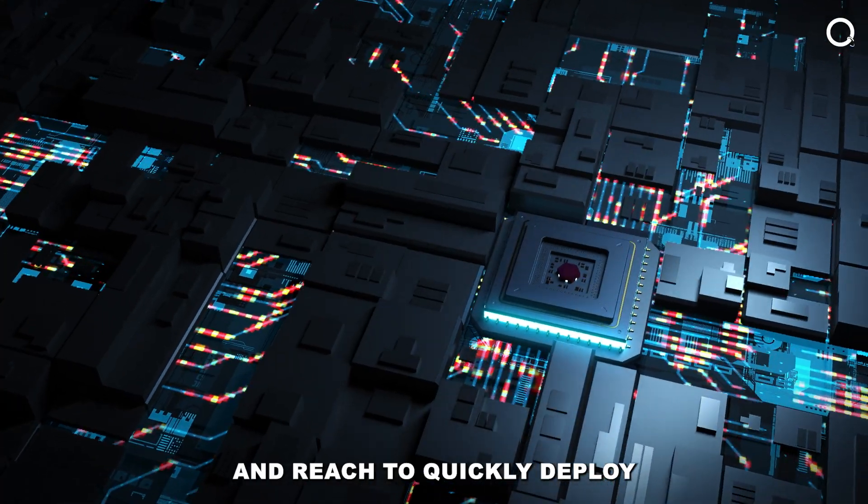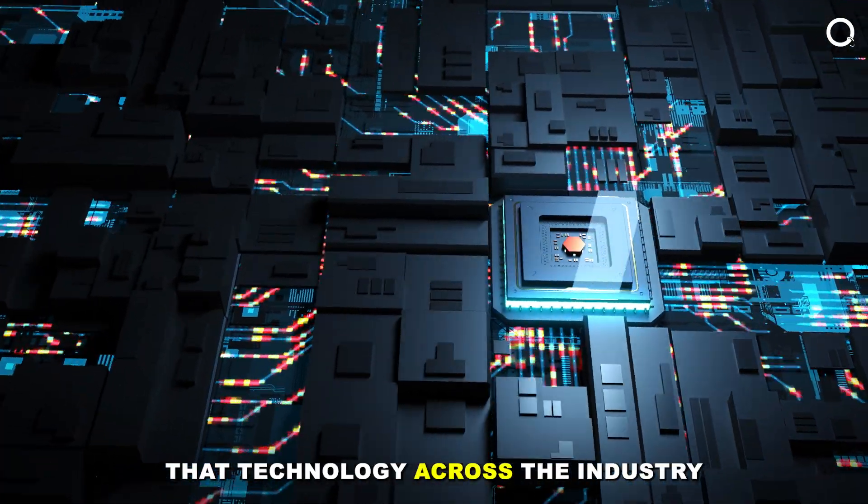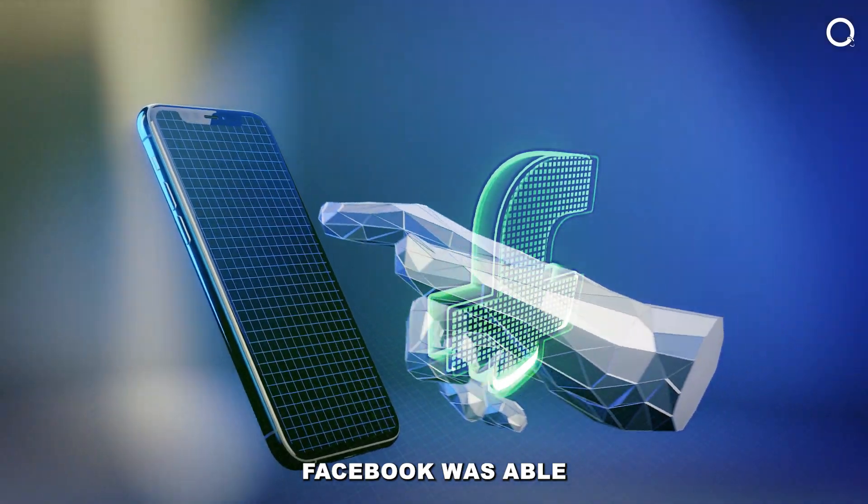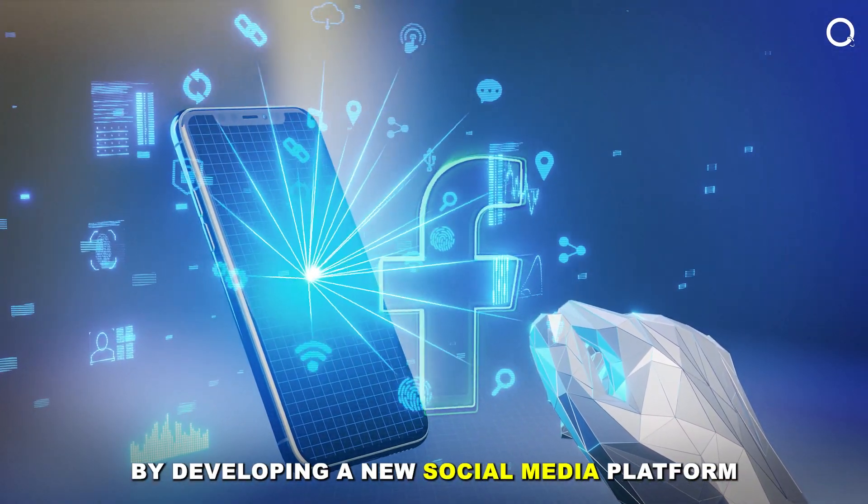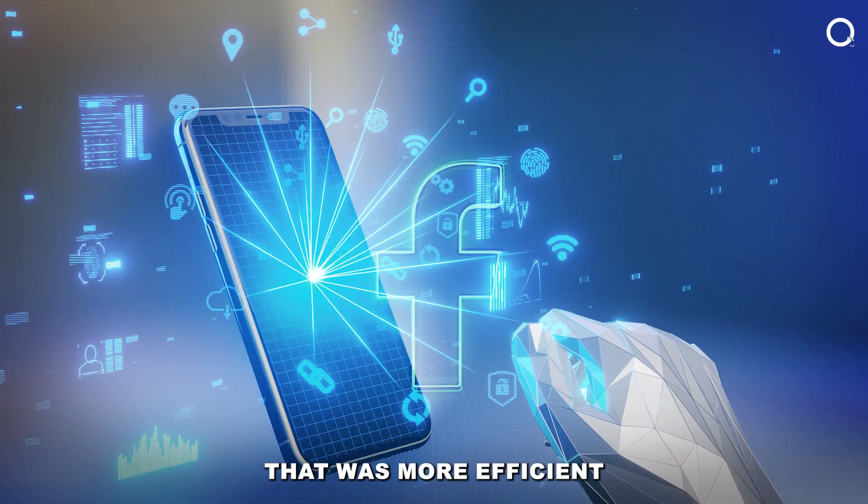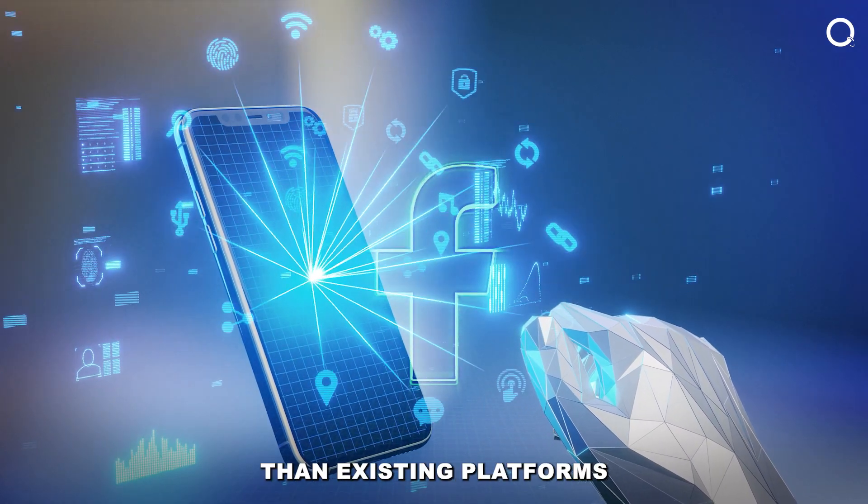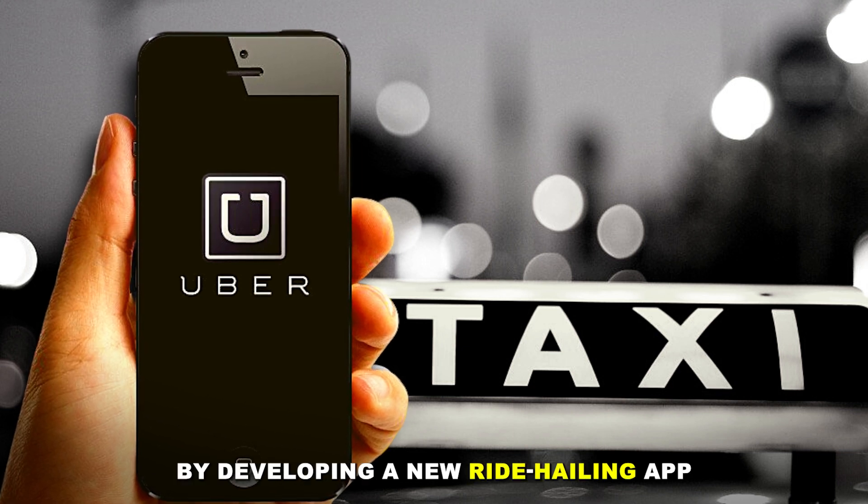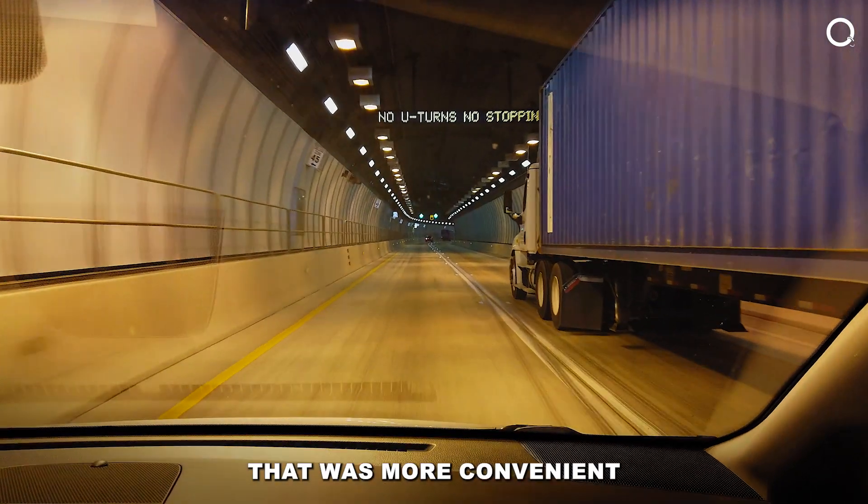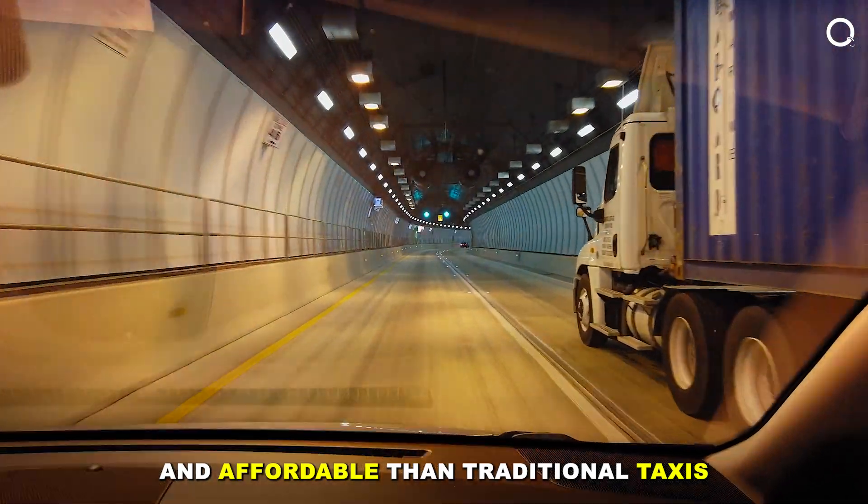Once a company has developed a new technology, it can use its scale and reach to quickly deploy that technology across the industry. For example, Facebook was able to computerize the communication industry by developing a new social media platform that was more efficient and user-friendly than existing platforms. Uber was able to computerize the taxi industry by developing a new ride-hailing app that was more convenient and affordable than traditional taxis.